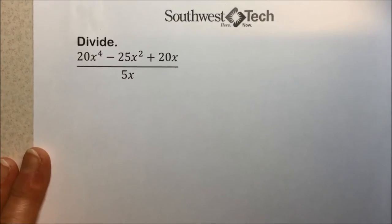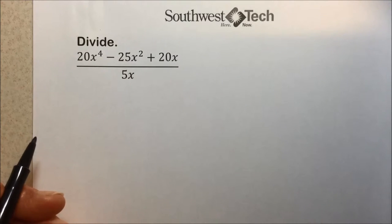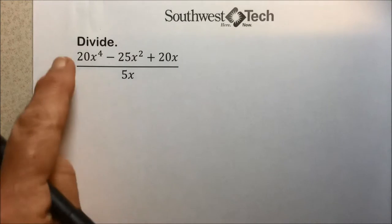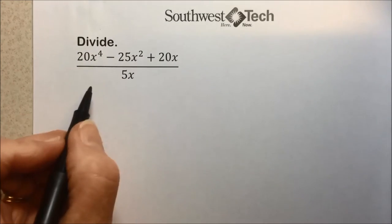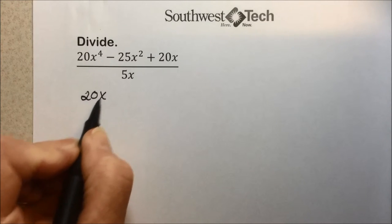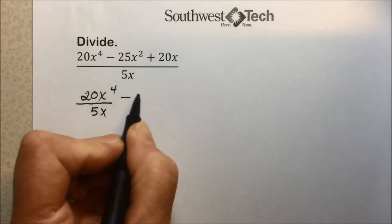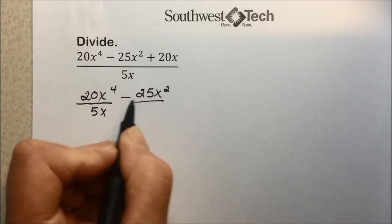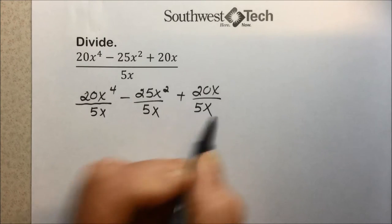So let's take a look at a polynomial divided by a monomial. We're going to apply that rule in the opposite direction. This polynomial came from the individual rational expressions over the common denominator. So to divide, we will take each of those terms: 20x to the fourth over the common denominator, minus 25x to the second over the common denominator, plus 20x over the common denominator.